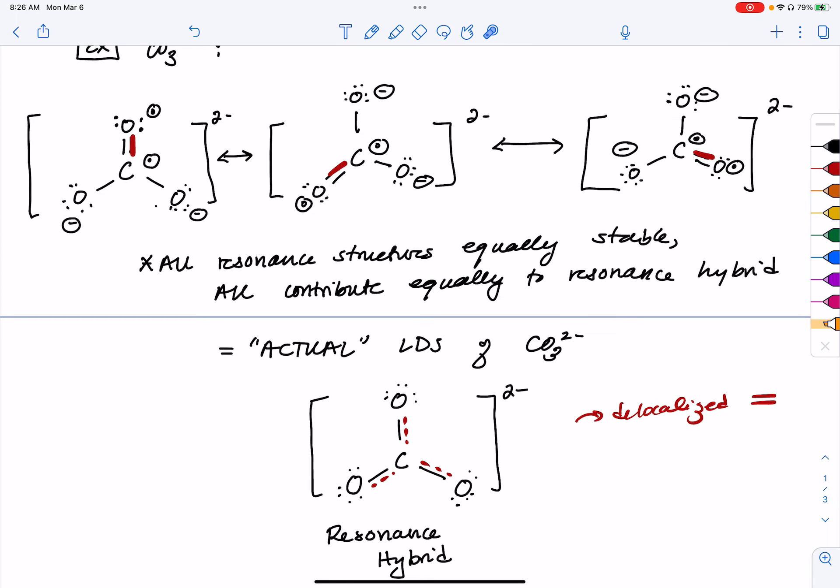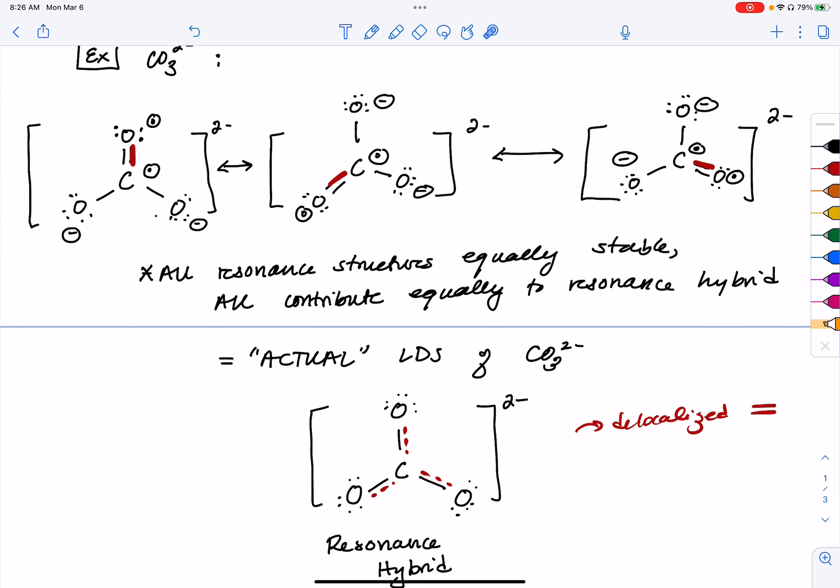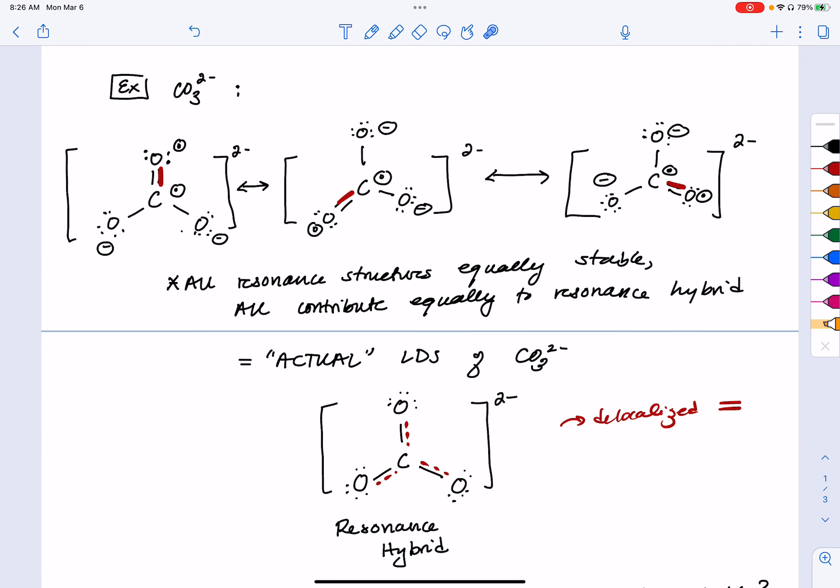However, you do have to look out for compounds like carbonate here where you have equally valid resonance structures that are all equally stable. In that case, then you have to consider what the resonance hybrid might look like because this is the actual Lewis dot structure.